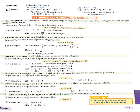इसमें यदि हम two integers को divide करते हैं तो हमारा solution integer भी हो सकता है और fraction में भी आ सकता है। यहाँ पर आपको two examples दिये गए हैं। First is minus 9 divided by 3 — our quotient is minus 3, and minus 3 is an integer. Now the second example is 16 divided by 5; here 16 upon 5 is not an integer, it is a fraction.